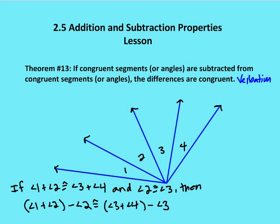And again, applying this to angles as well. If congruent segments or angles are subtracted from congruent segments or angles, then the differences are congruent. In this case we have angles — two pairs of congruent angles where one pair is subtracted from a larger pair. So if angle two is congruent to angle three, and I subtract them from a larger set of congruent angles — angle one plus two and angle three plus four — then the differences, angle one and angle four, are going to be congruent.